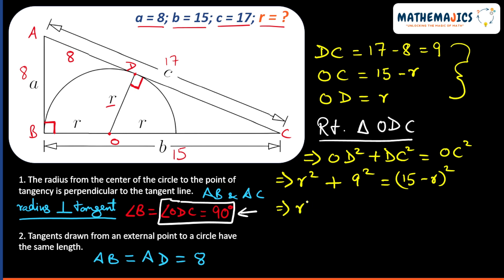R² plus 81 is equal to... now we will expand this bracket: 225 plus R² minus 30R. To expand this bracket I used algebraic laws.